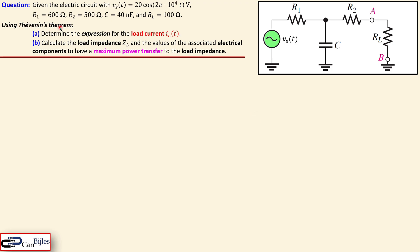Using Thevenin's theorem we would like to determine, in the first case, the expression of the load current in the time domain. In the second case we want to calculate the load impedance and the values associated with this impedance — the resistor, capacitor, or inductor values — to have maximum power transfer to the load.